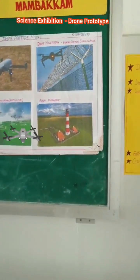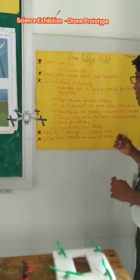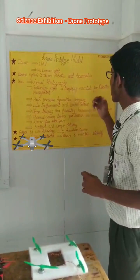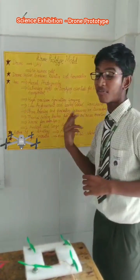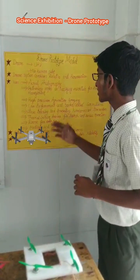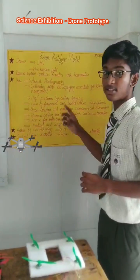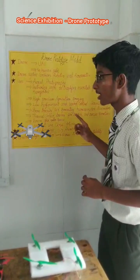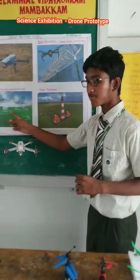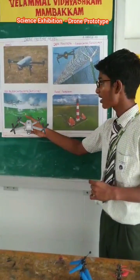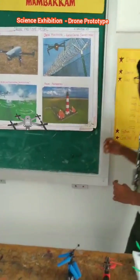Next is gathering information or supplying assistance for disaster management, which means it provides assistance during times of disaster. Next is high precision vehicle spraying. As you can see here, the drone sprays water and fertilizers to the crops.